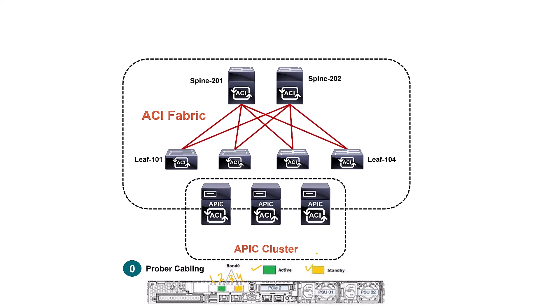You pick two ports — either odd numbers (one and three) or even numbers (two and four). Let's say we've chosen two and four: the one in green is your active interface and the one in yellow is your backup or standby interface. That's your proper cabling for connecting APICs to leaves.